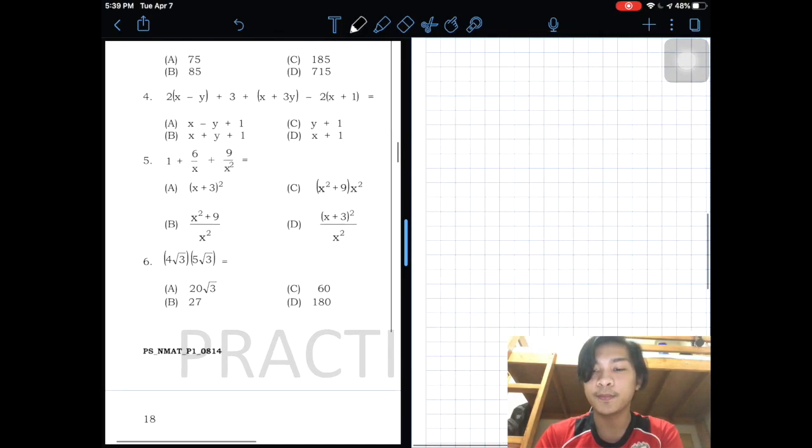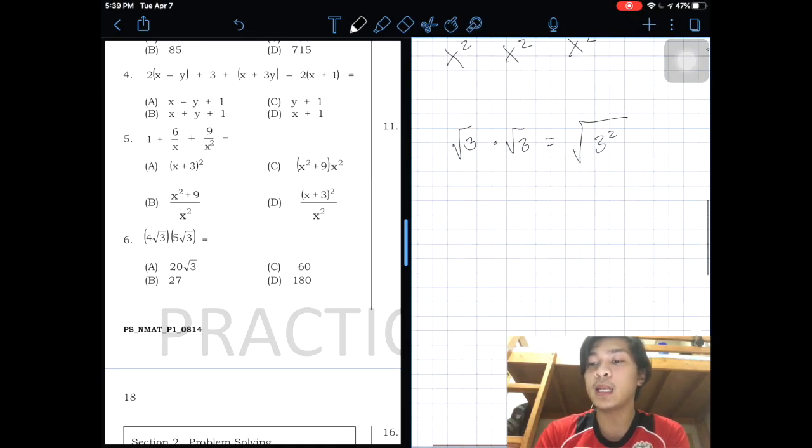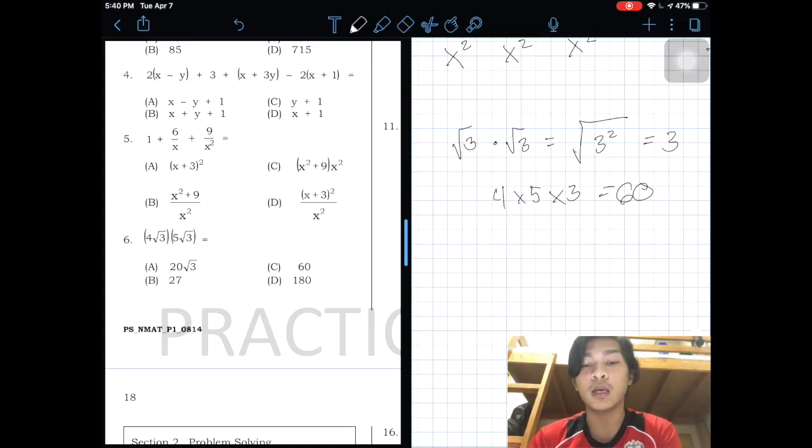Number 6. For radicals, you will just have to multiply. In multiplication of radicals, if you can see 2 radicals, cube root of 3 times cube root of 3 is just equal to the cube root of 3 squared. This just becomes 3. To simplify, this is just 4 times 5 times 3, which is 60. The answer is C.